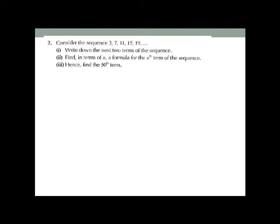Now for question 2, consider the sequence 3, 7, 11, 19. You need to write the next two terms, find the formula for the nth term, and hence find the 50th term. The difference between consecutive terms is 4. So the next two terms are 19 + 4 = 23, and 23 + 4 = 27.